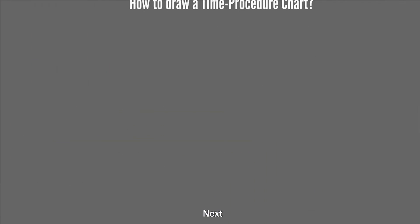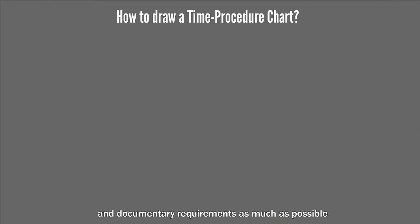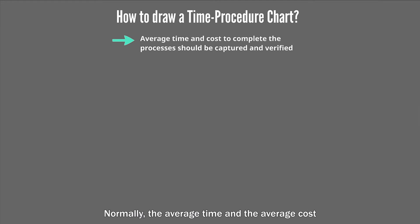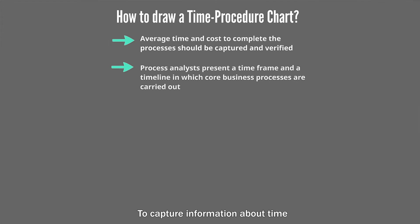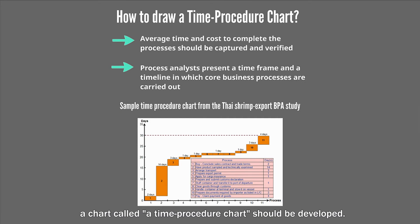Next, drawing a time procedure chart: process analysts should collect quantitative data about business processes and documentary requirements — especially those related to the time and cost incurred in each business process. Normally, the average time and the average cost it takes to complete the process should be captured and verified. To capture information about time needed, a chart called a time procedure chart should be developed.